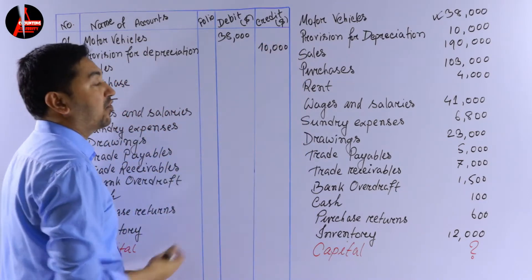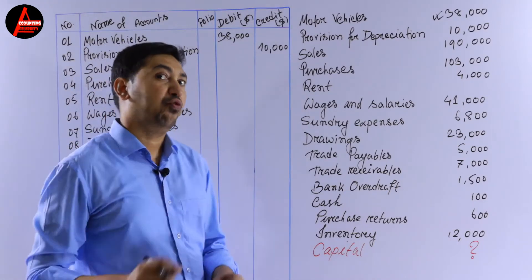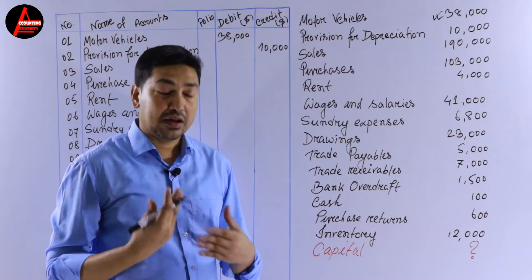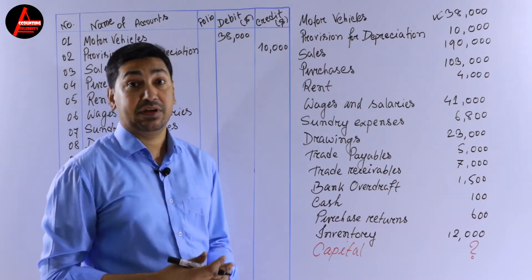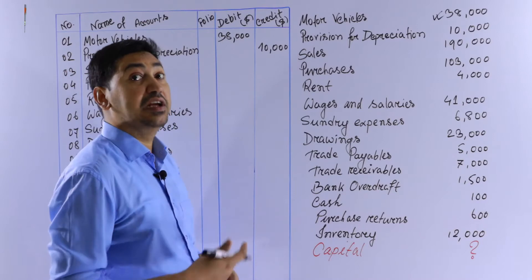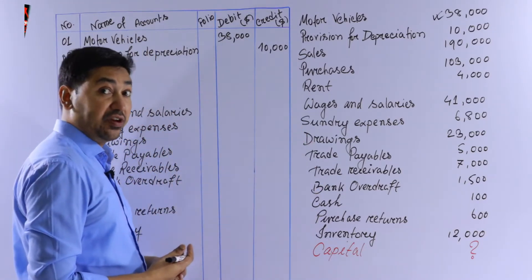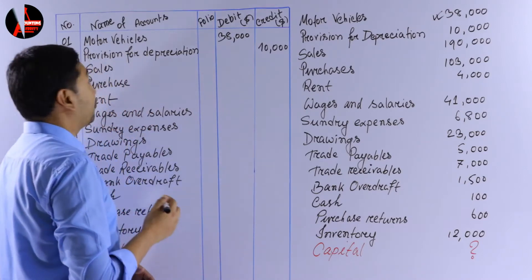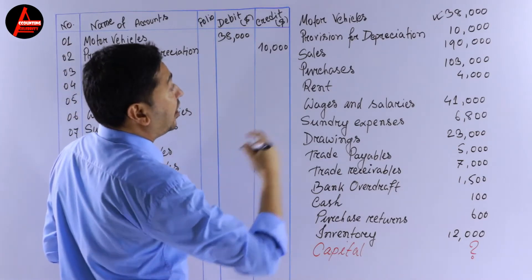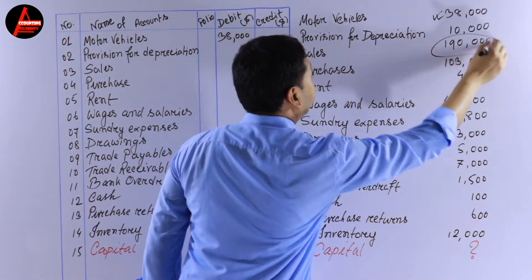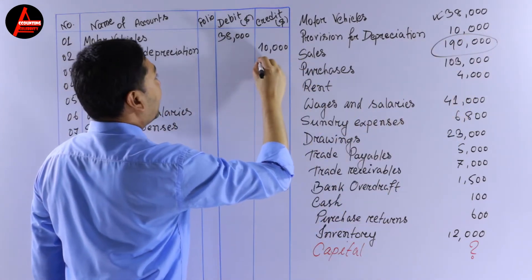Next we have sales. It's a revenue nominal account. The rule for nominal accounts is: all expenses and losses are debited, and all incomes and gains are credited. Sales is revenue, so it will be credited — 190,000 dollars on the credit side.